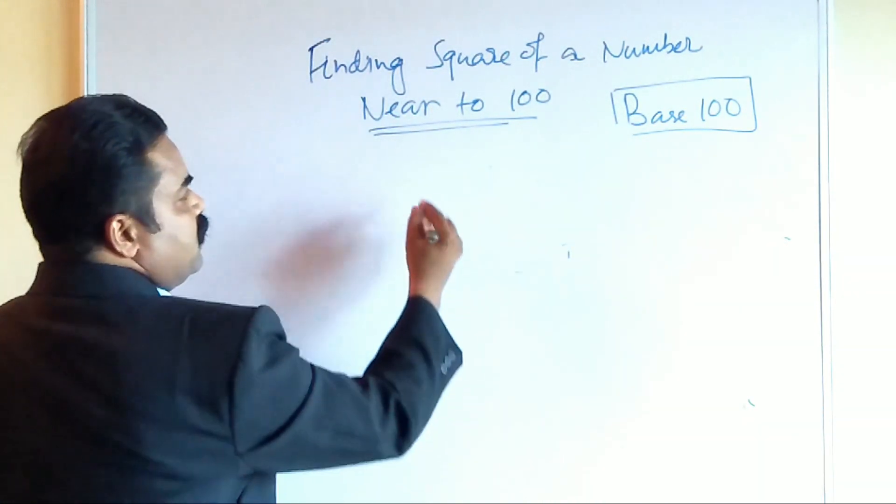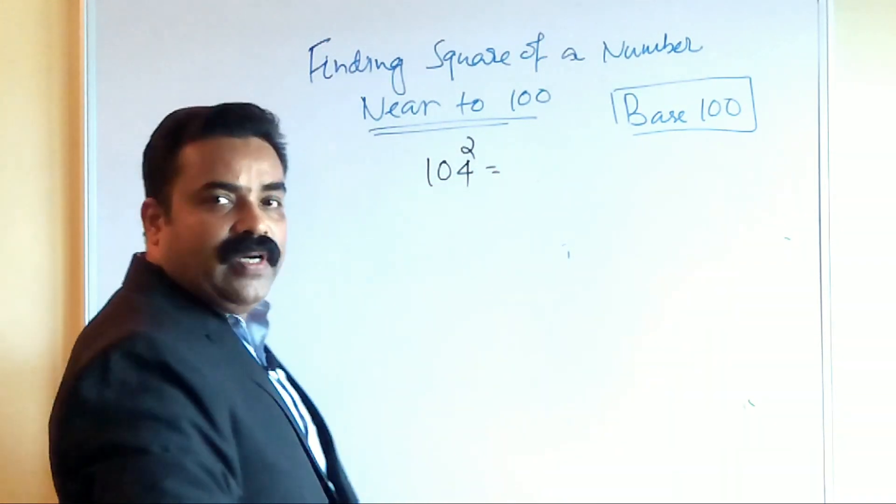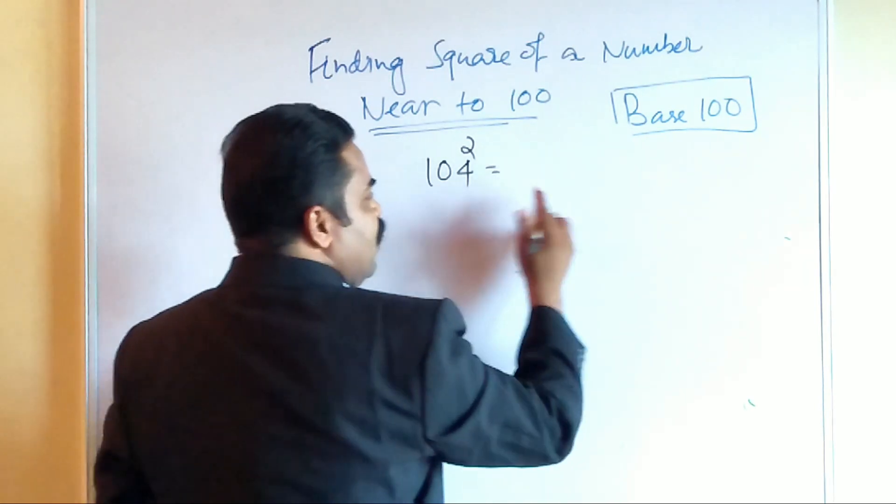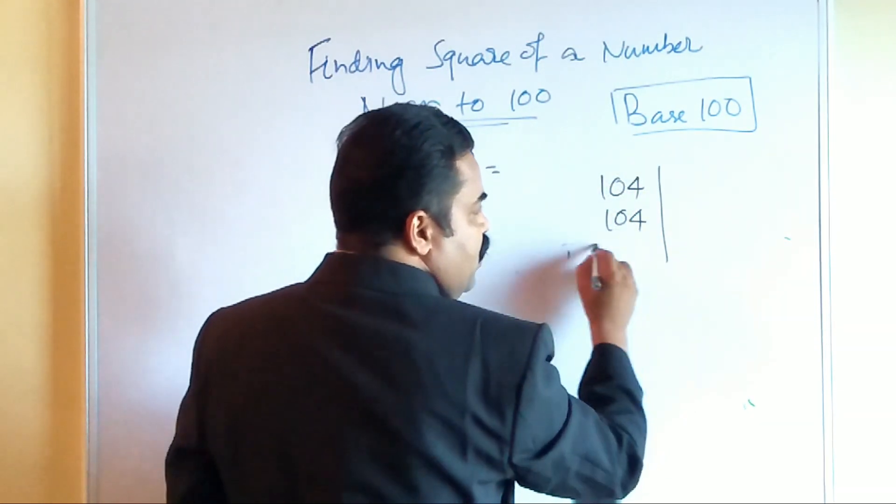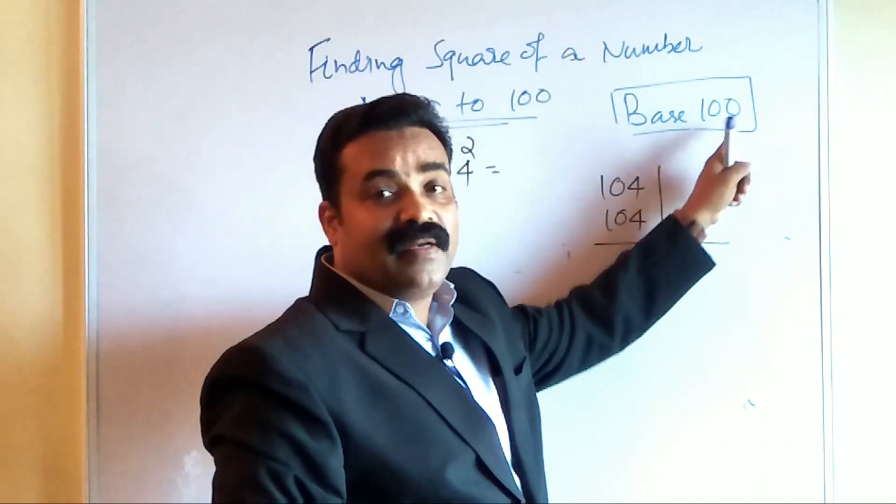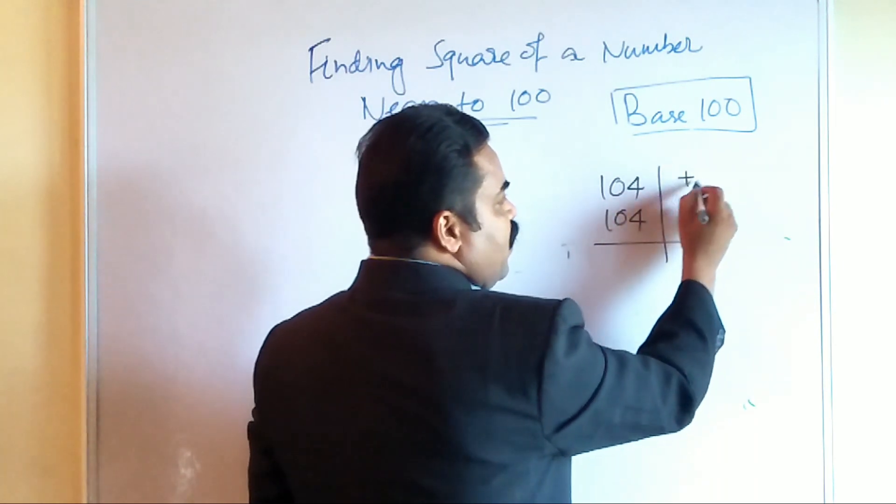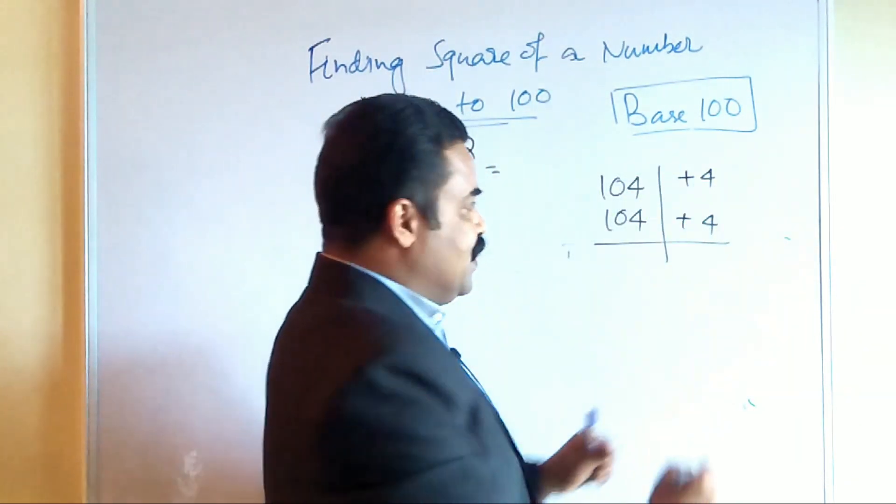Suppose we will take a number 104 and you want to square 104. So what is the method? Method remains the same. 104 means 104 into 104. Here base number is 100. 104 is deviated from 100 by plus 4, so instead of minus we will take plus 4 here. Again plus 4 here. 4 times 4 is 16.